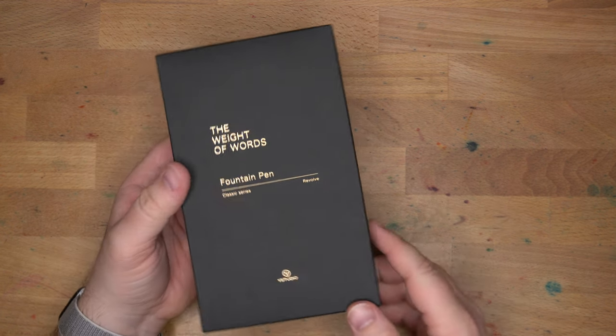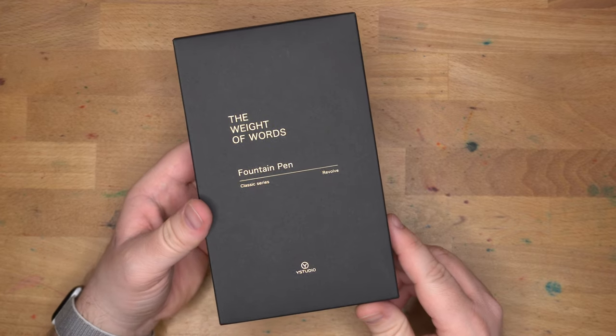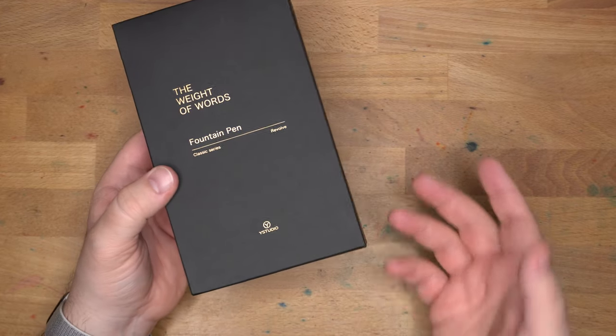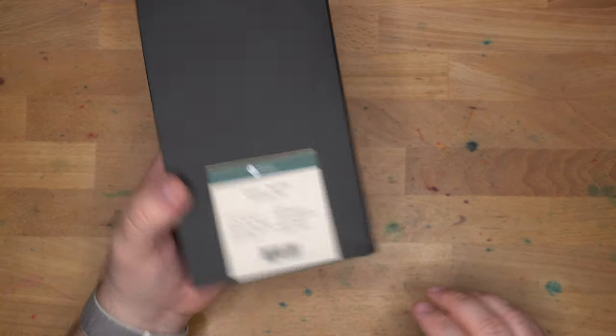Hello, folks. Welcome to InkDependence. I'm Mike. Today, we're talking about this pen. This is the Y Studio Classic Revolve Fountain Pen, which is a very long name for a pen. I will get in here. It has the label on the back. You see this is going to be green.